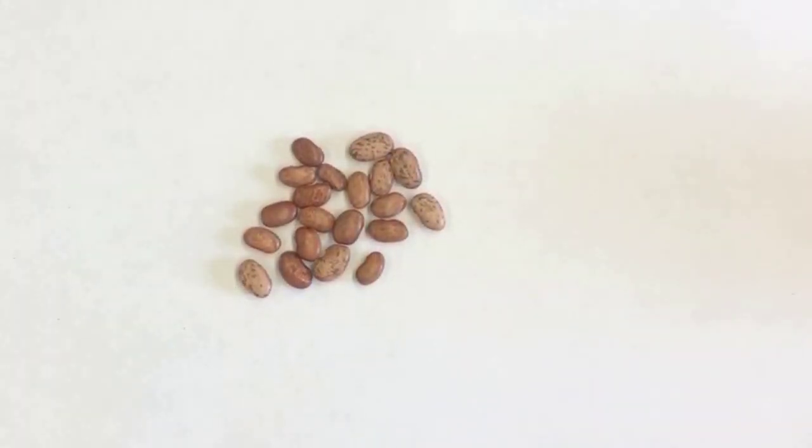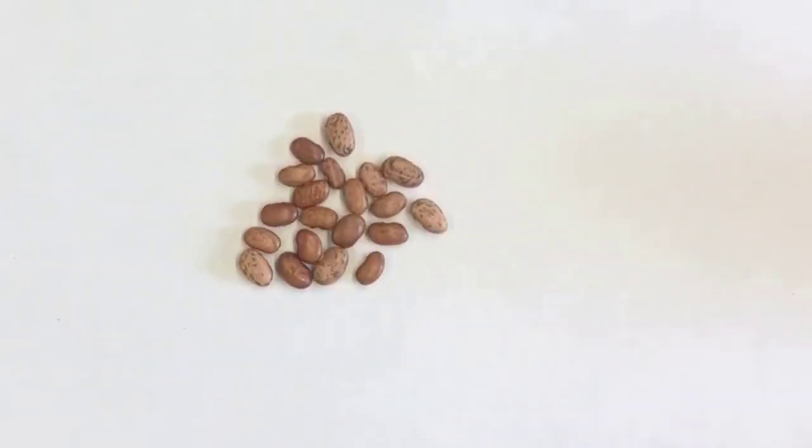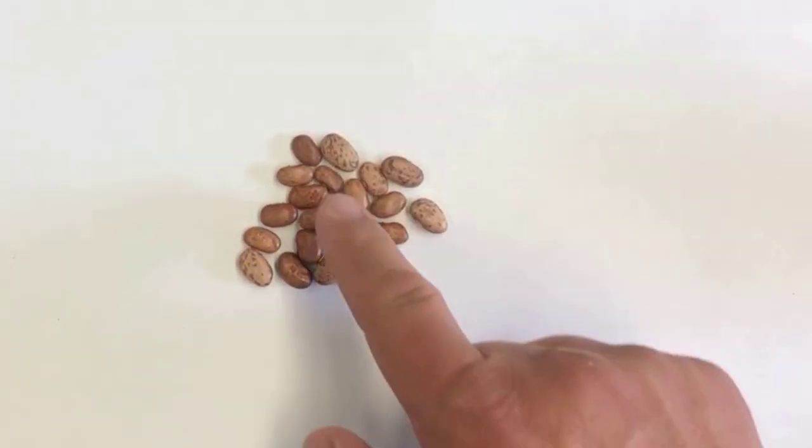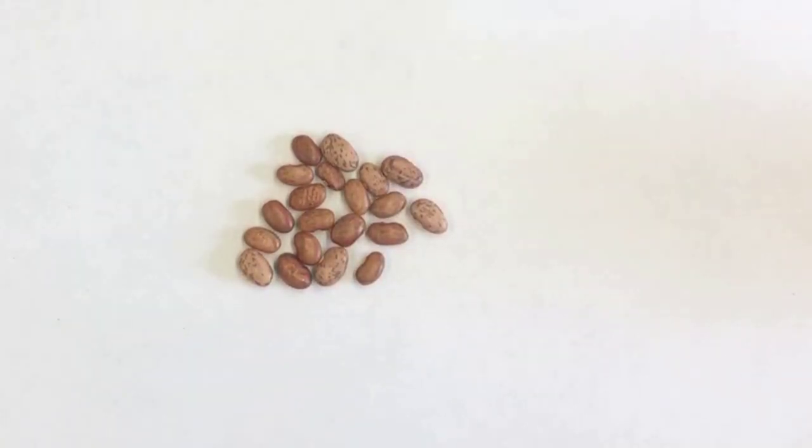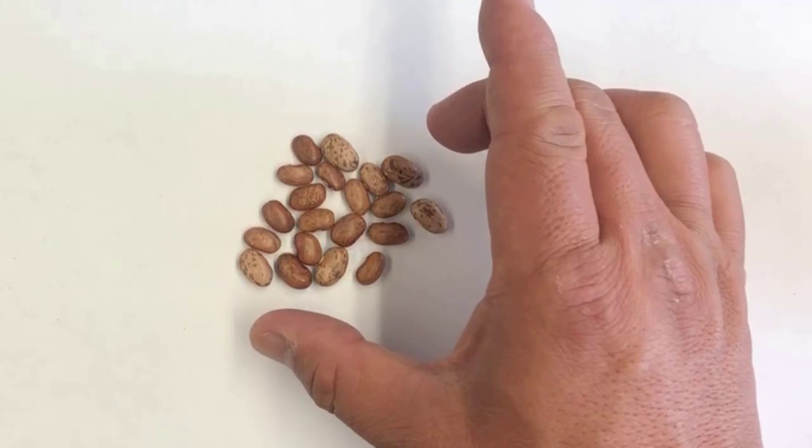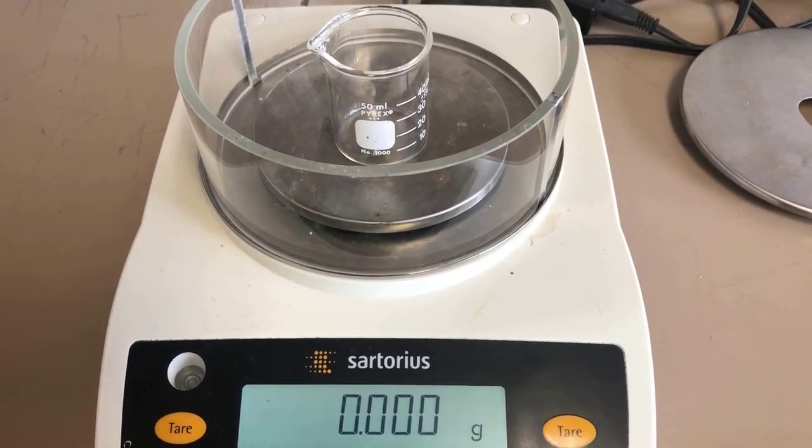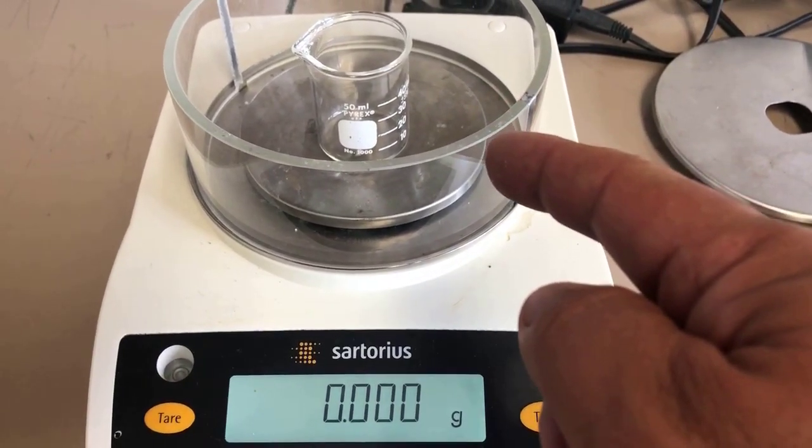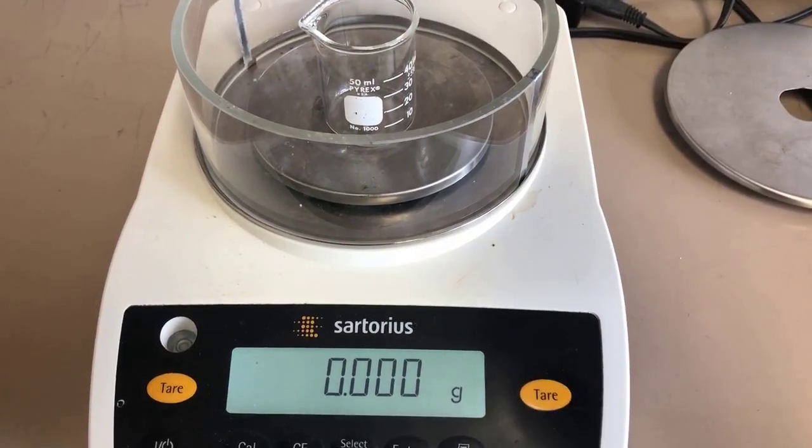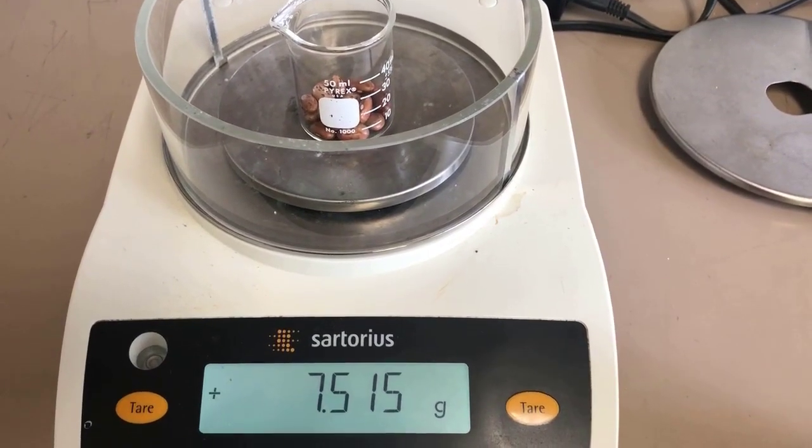We'll calculate the mass of the beans simply by subtracting those numbers. Next what we'll do is we'll take these 20 beans and get their mass on the balance and we'll use that to calculate the mass per bean. You notice that some of the beans are big and some are small, but we have a large enough sample. We should be able to determine a relatively accurate average mass. So to get the mass of the beans, I'll tare out the mass of the beaker and I'll just add the beans to it. And that's the mass of 20 beans.